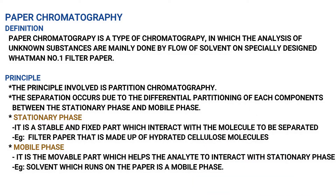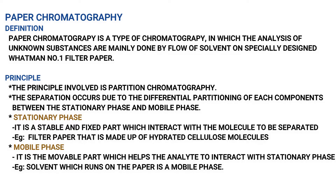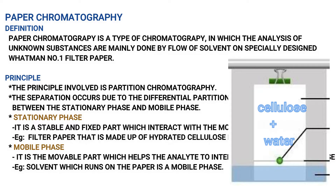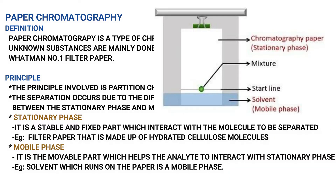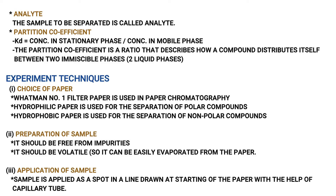The separation occurs due to the differential partitioning of each component between the stationary and mobile phase. The principle is based upon how the sample is separated. The next point is stationary phase and mobile phase. First, the analyte — the sample to be separated is called the analyte. Second, the partition coefficient: KD equals concentration in stationary phase divided by concentration in mobile phase.